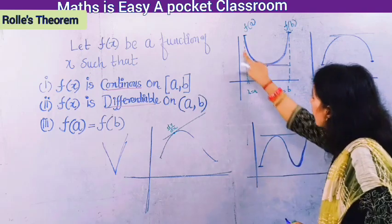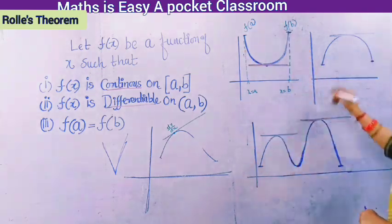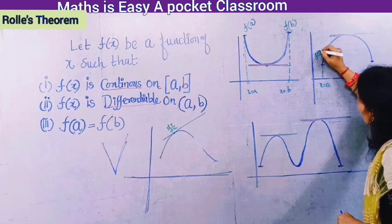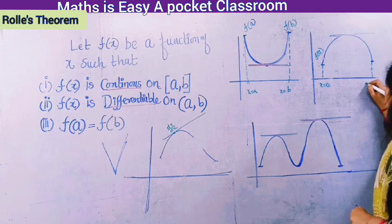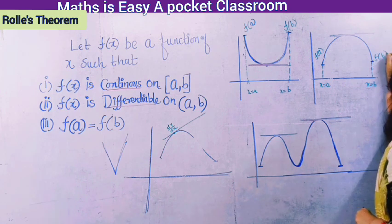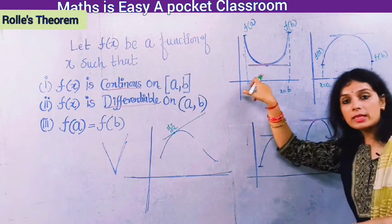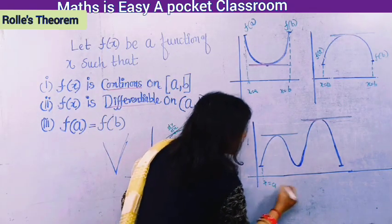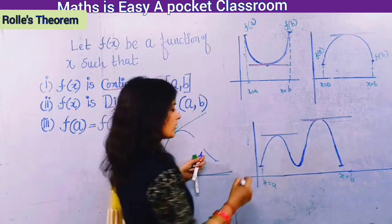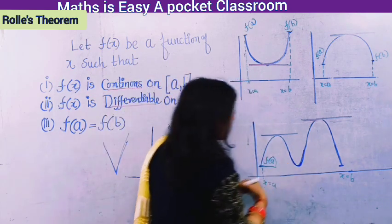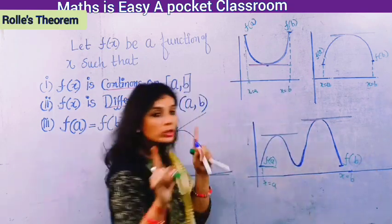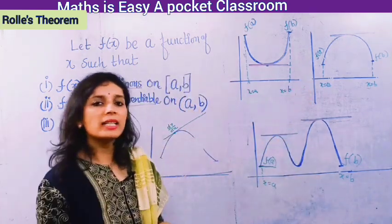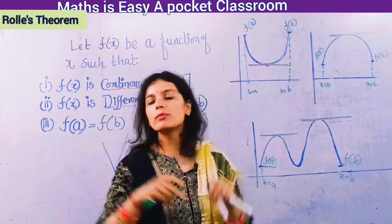There are different possibilities. In the first case, the curve goes up between a and b with f(a) = f(b). In the second possibility, the curve dips between a and b. In a third possibility, the function can oscillate between some values while still satisfying f(a) = f(b).